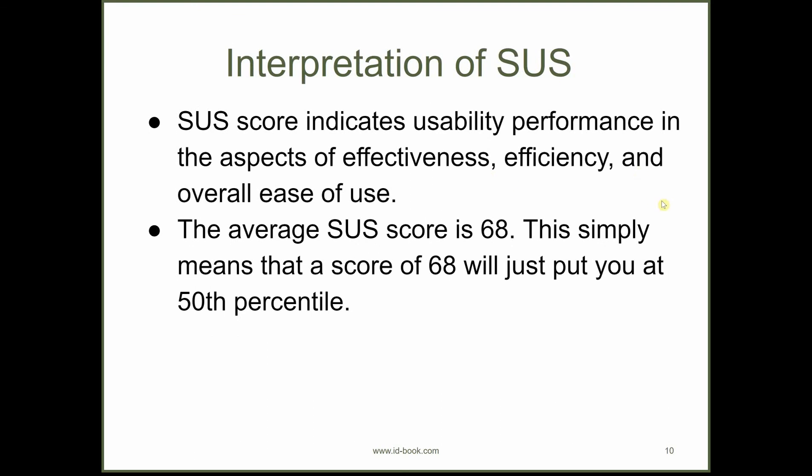So usually when we calculate an SUS score, we end up with a number that's between 0 and 100. These numbers are not the same as a percentage or a percentile. It's just a score that needs to be interpreted, and I'm going to tell you how to interpret it.